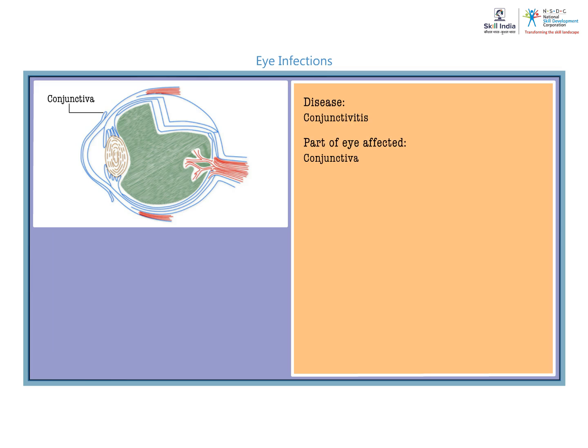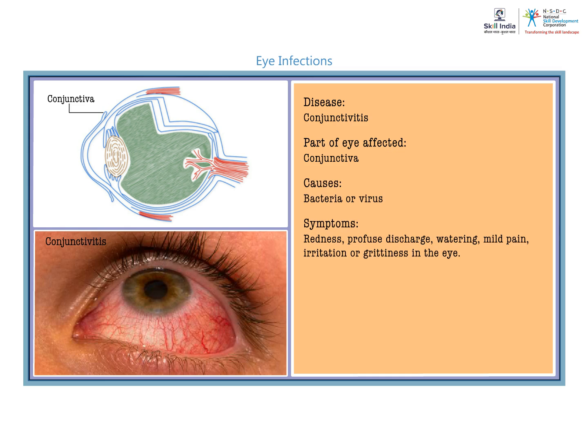Conjunctivitis is an eye infection when the conjunctiva is affected. Infection is caused due to bacteria or virus. Symptoms of conjunctivitis could be redness of the eye, profuse discharge or watering from the eye, and mild pain, irritation, or grittiness in the eye.